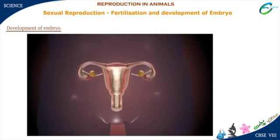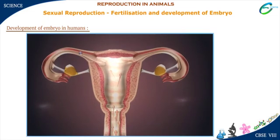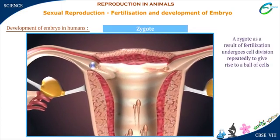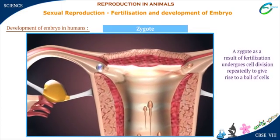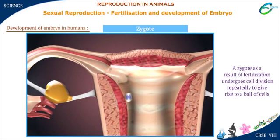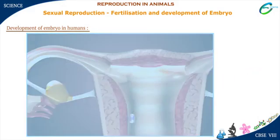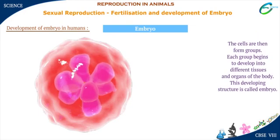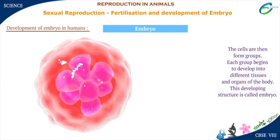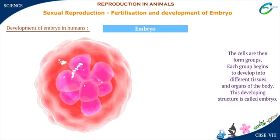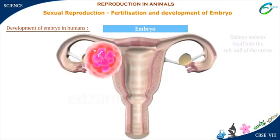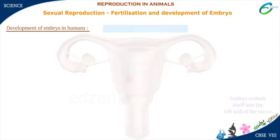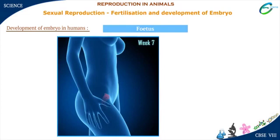Let's learn how a zygote develops further inside the mother's body. A zygote, as a result of fertilization, undergoes cell division repeatedly to give rise to a ball of cells. The cells then form groups, and each group begins to develop into different tissues and organs of the body. This developing structure is called embryo. The embryo embeds itself into the soft wall of the uterus and continues to develop there.